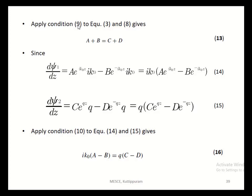The first boundary condition gives A + B = C + D. Now we move to the second boundary condition: dψ₁/dz = dψ₂/dz at z = 0. Taking the derivatives, dψ₁/dz = ik₀(A·e^(ik₀z) − B·e^(−ik₀z)) and dψ₂/dz = q(C·e^(qz) − D·e^(−qz)). Applying the boundary condition at z = 0, we get the result ik₀(A − B) = q(C − D).